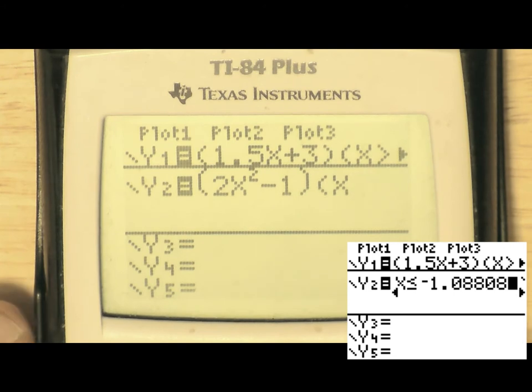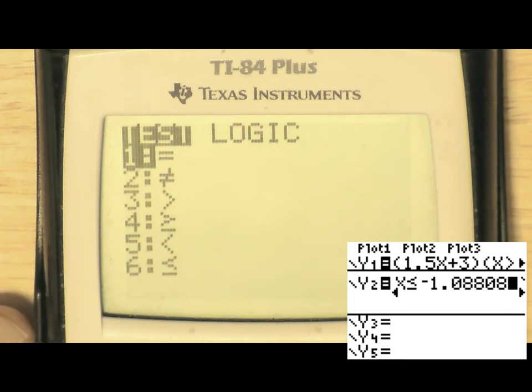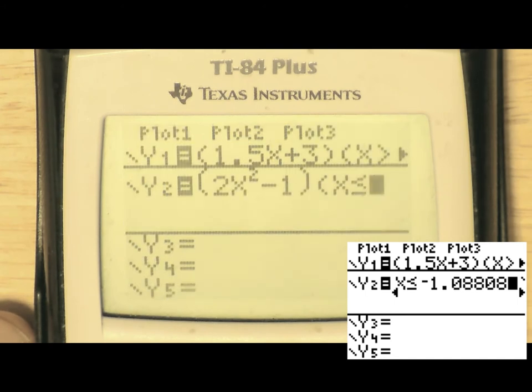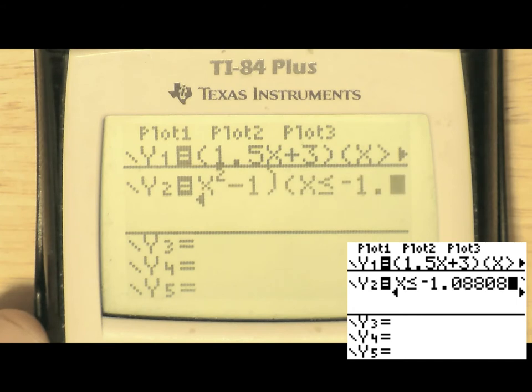So, less than or equal to will be 2nd, math, and 6. Those are the key presses. And then you enter your number. 2nd, math, and 6. And then enter the negative 1.088087.